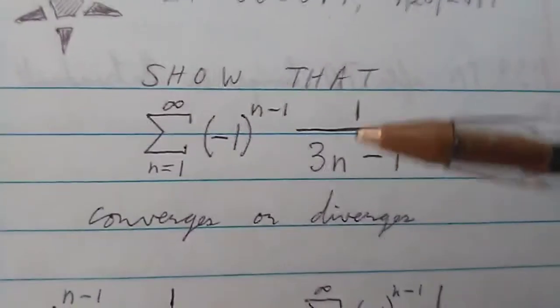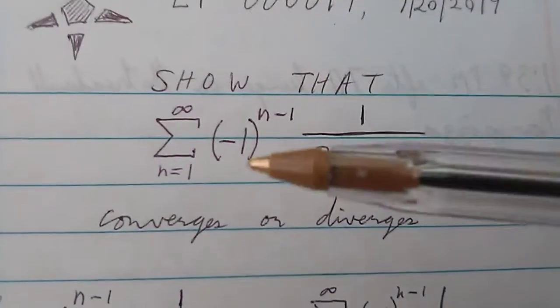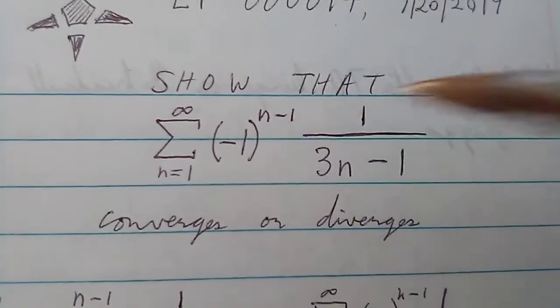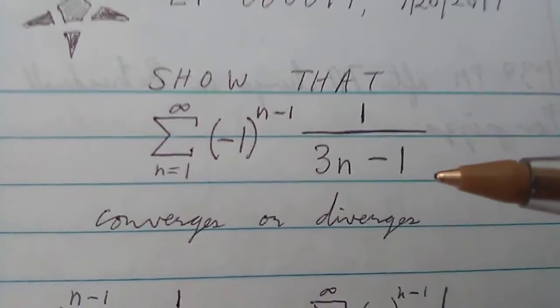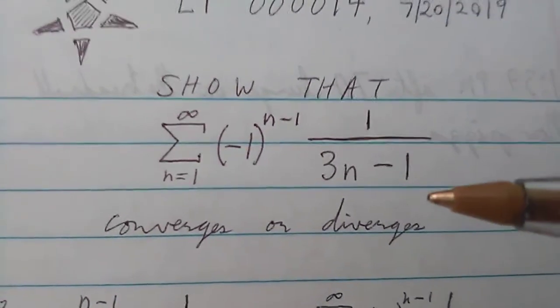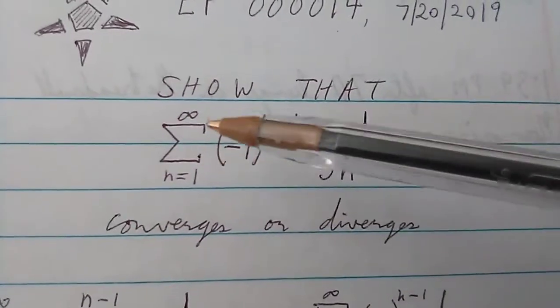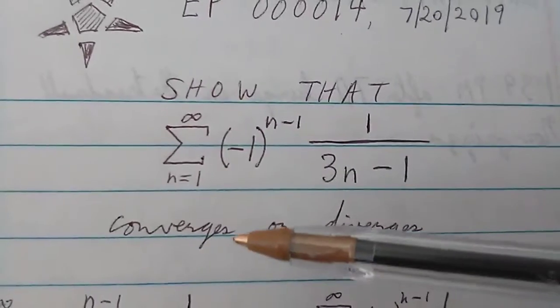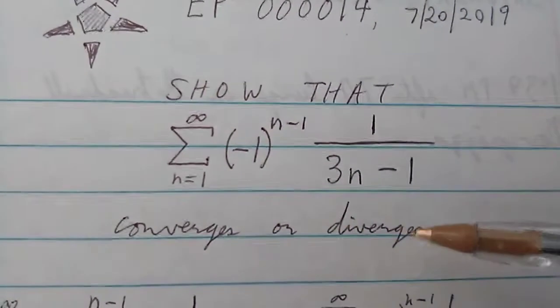Today, just real quick, we're going to show that the summation of (-1)^(n-1) multiplied times 1 over 3n minus 1, summed from 1 to infinity. We're going to determine whether it converges or diverges.